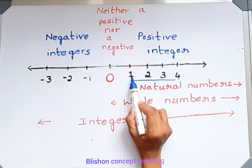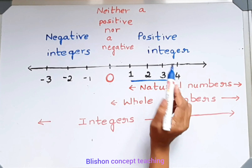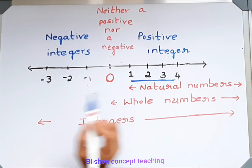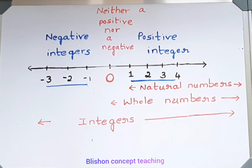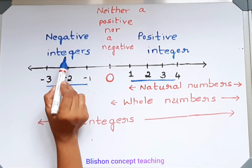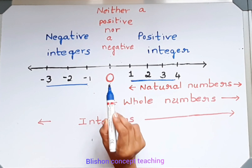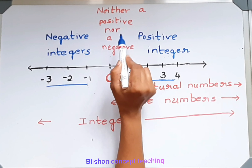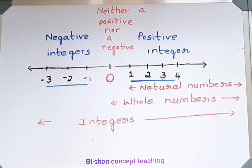See here, one, two, three, four, and so on are called positive integers. And minus one, minus two, minus three, and so on are called negative integers. Then, what about zero? Zero is neither a positive nor a negative integer — zero has no sign. It does not have a positive or negative sign. Thank you.